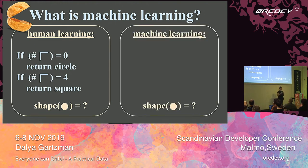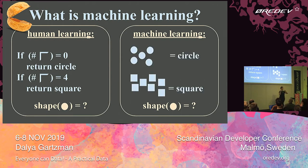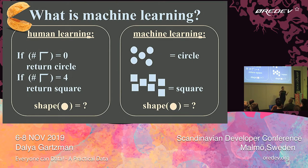And machine learning, in a nutshell, is learning by examples — which means that I, as the designer of the program, need to design a learning scheme that allows me to introduce examples for the machine to learn by itself. So maybe I show the machine a bunch of circles and say these are all circles, a bunch of squares, these are all squares. And then when the program sees a new shape it has never seen before, maybe it can understand if it's a square or a circle, if I designed my learning scheme correctly.